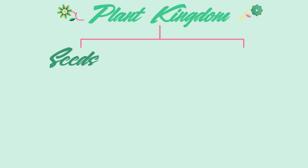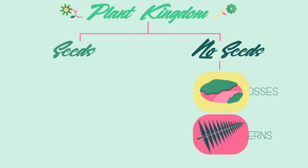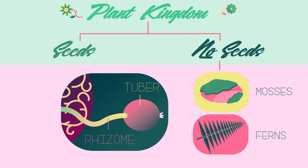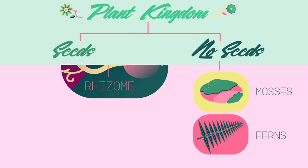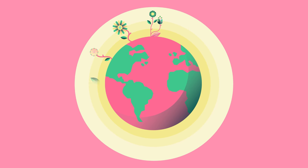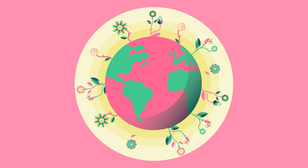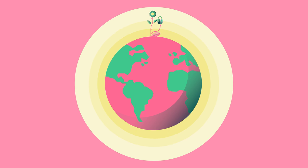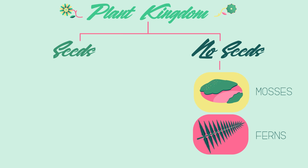The plant kingdom can be split into plants with seeds and plants without seeds. Not every plant grows from a seed — ferns, for example, grow from spores instead. Other plants use asexual reproduction and grow new plants from rhizomes or tubers. The evolution of the seed was a huge evolutionary step for plants. It meant they could grow anywhere on earth, in any environment — they were no longer limited to extremely moist conditions.